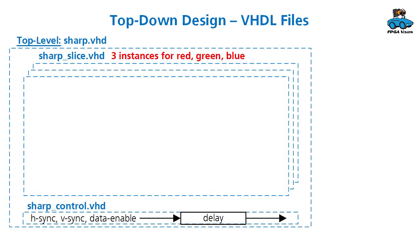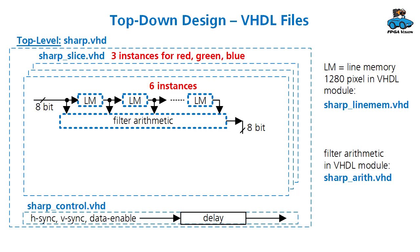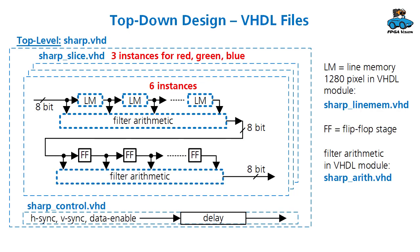From the architecture we can then do the VHDL design and we start top-down. Our top level is called sharp_vhd and the arithmetic is in the submodule sharp_slice. We use three instances of this submodule — one instance for red, green and blue. There's another module at the top level called sharp_control that is required for delaying the sync signals of the video signal. In the module sharp_slice we then have a submodule for the line memory, with six instances called LM, and another submodule for the filter arithmetic. The output of the first filter arithmetic is then given to flip-flop stages and again to the filter arithmetic. The filter arithmetic is called sharp_arith and the line memory is sharp_line_mem.